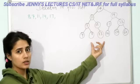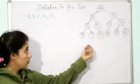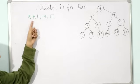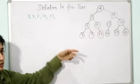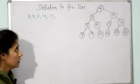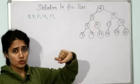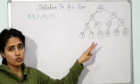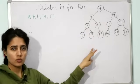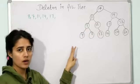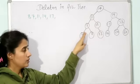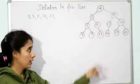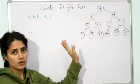This is the AVL tree we created in the last video. Now suppose you want to delete data in this series: 8, 7, then 11, then 14, then 17. An AVL tree is first of all a BST. Second, the balance factor of each and every node should be either minus 1, 0, or 1. Balance factor is calculated as height of left subtree minus height of right subtree, or sometimes height of right subtree minus height of left subtree.